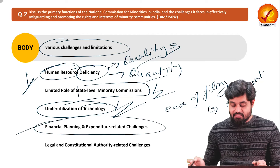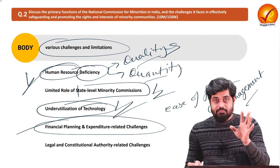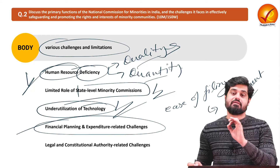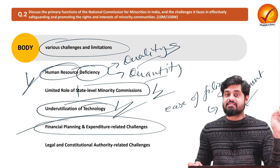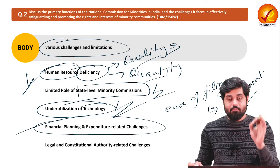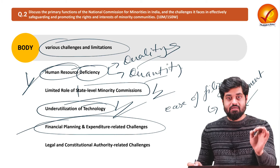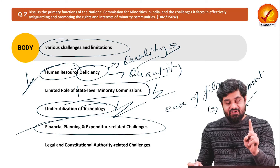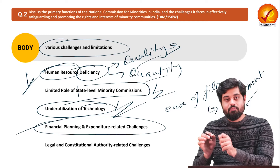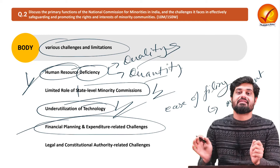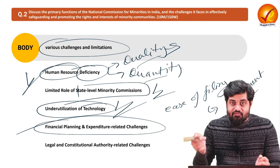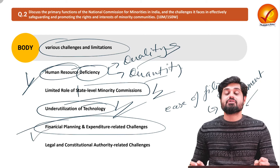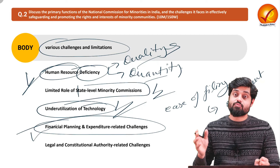Financial planning and expenditure related issues are also significant. Adequate financing is not available commensurate with the enormous scale of the commission's responsibilities. Furthermore, whatever funding is available, only a small proportion is allocated for research and studies, which impacts the quality of recommendations. Financial independence must also be ensured.